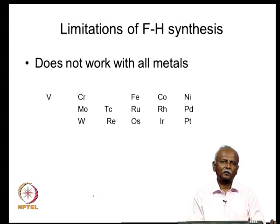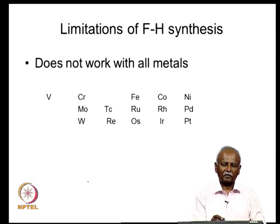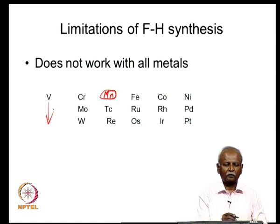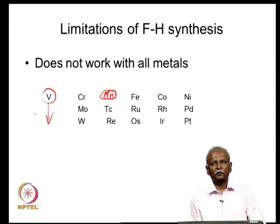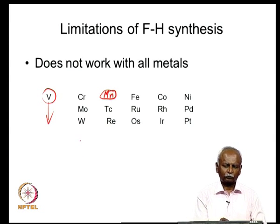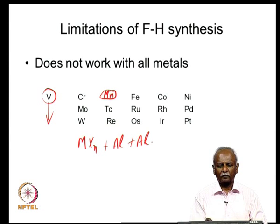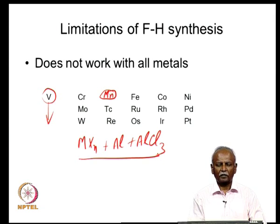There are limitations in terms of the metal — it works for most metals in the transition series, but there are some surprising gaps. For example, manganese is a metal atom not found in this series, and so also the vanadium series — only vanadium is a suitable candidate. So you take the metal chloride MXn and reduce it with aluminum in the presence of AlCl3. That is the Fischer-Hafner recipe for making a metal sandwich complex with arenes.